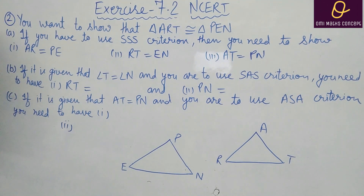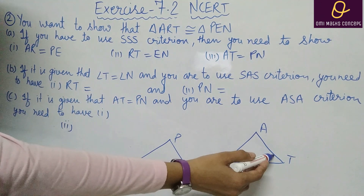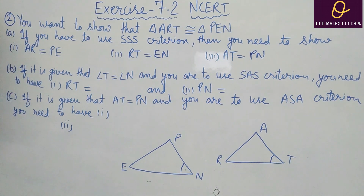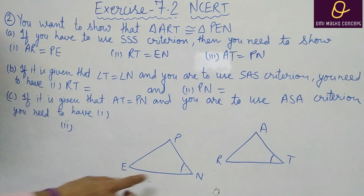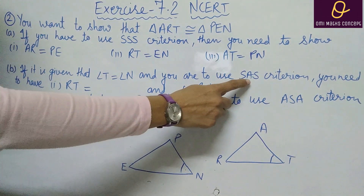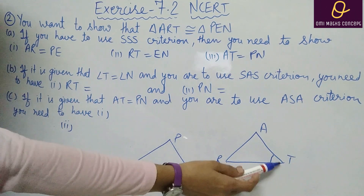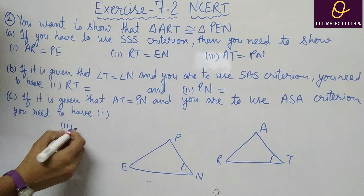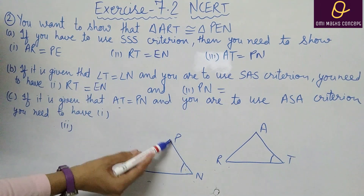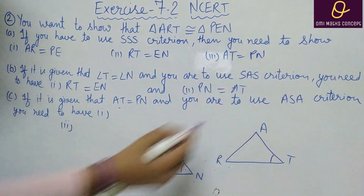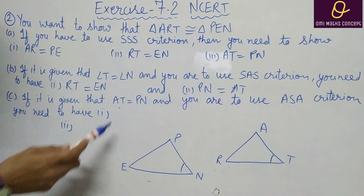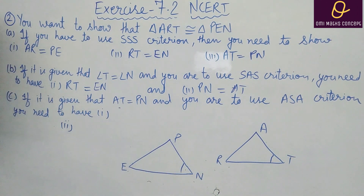Second part of Q2: if angle T equals angle N and you are to use SAS (Side-Angle-Side), you need two sides with the angle between them. RT equal to EN, angle T equal to angle N (given), and AT equal to PN. For the third part, if AT equal to PN is given and you use Angle-Side-Angle, the two angles at endpoints of AT must equal those at PN.